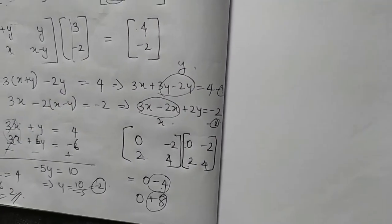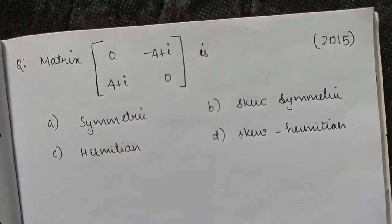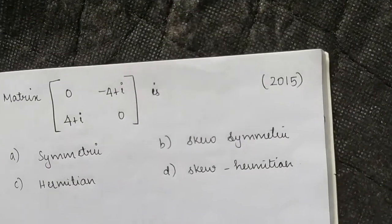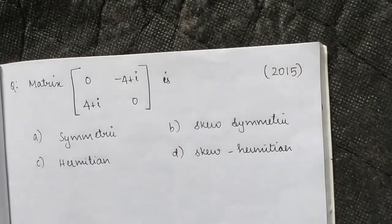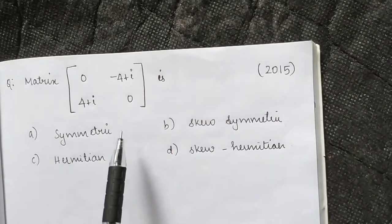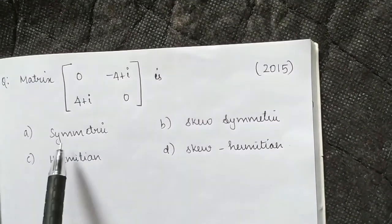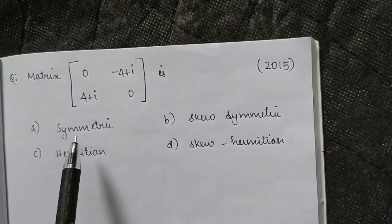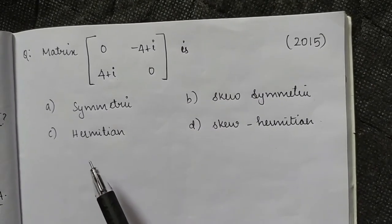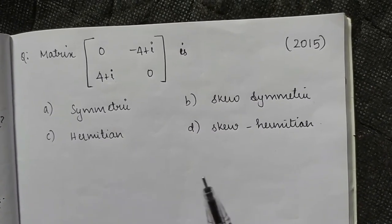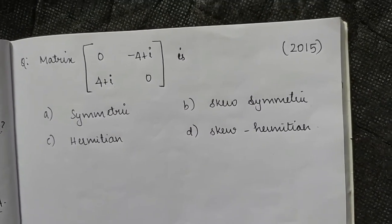We add the second row into the third element. The question asks whether the matrix is symmetric, skew-symmetric, Hermitian, or skew-Hermitian.